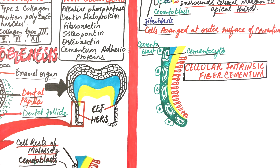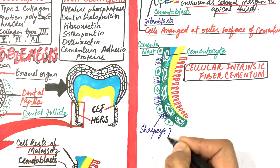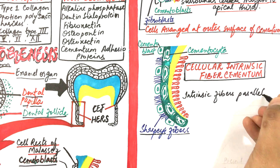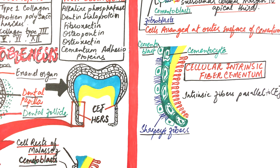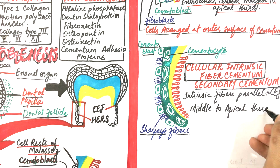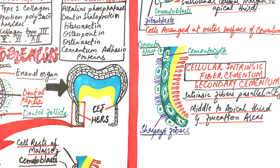Although the ends of PDL fibers or Sharpey's fibers do enter some distance within the cellular cementum, they do not intermingle with the cementum fibers. Unlike in acellular cementum, these fibers are placed far apart in cellular cementum. The collagen fibers in cellular intrinsic fiber cementum are parallel to the tooth surface. Since it forms after acellular extrinsic fiber cementum, it is also called secondary cementum. It is present in the middle to apical third and furcation areas of multi-rooted teeth, and is mainly involved in adaptation and repair. Secondary cementum forms as soon as the teeth come into occlusion until exfoliation.